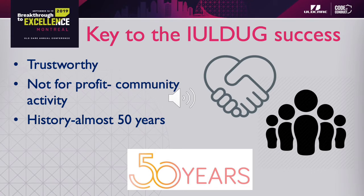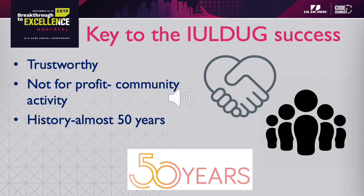What's the key to the system's success after being around for 50 years? First of all, it's trustworthy. The members trust each other because there's nothing to be gained one way or the other — it's a mutual system. Nobody can make an advantage over another member through the system. It's run as a not-for-profit community activity. Basically, all the charges for using the system are simply there to cover the operating costs and perhaps put a little into the reserves for future developments. And it does have a very long history — 50 years — so it seems to be in a very sustainable situation.